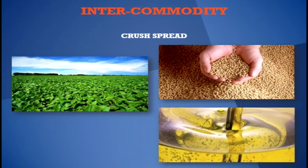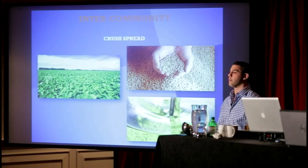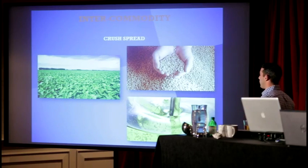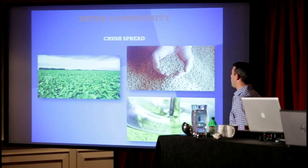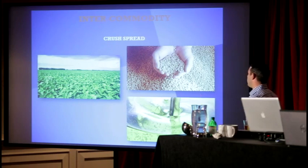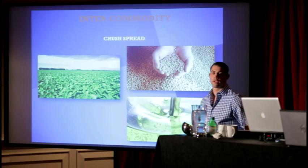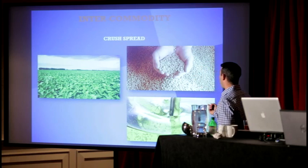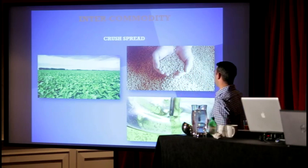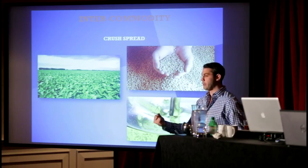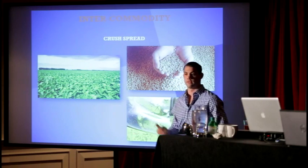The crush spread is traded by producers, farmers, and end users like General Mills, dealing with soybeans, soybean meal, and soybean oil contracts. You're buying beans, selling meal, and selling oil — or you can do the reverse crush spread: selling the beans, buying the bean meal, and selling the bean oil. You can trade at a one-to-one-to-one ratio, but the proper ratio is 11-9-10: 11 soybean meal contracts, 9 soybean oil contracts, and 10 soybean contracts. The margin benefit for this exchange crush spread is 90%. A good visual: take soybeans in your hand and smash them — what drips out is the soybean oil, and what's left is the soybean meal.